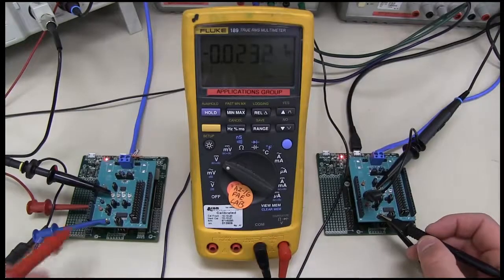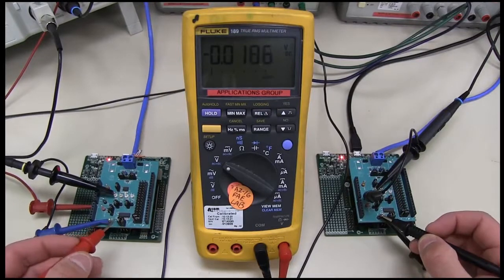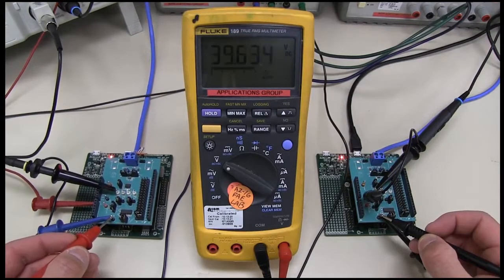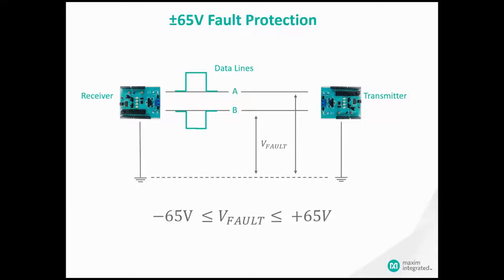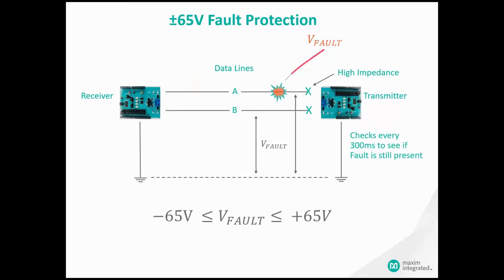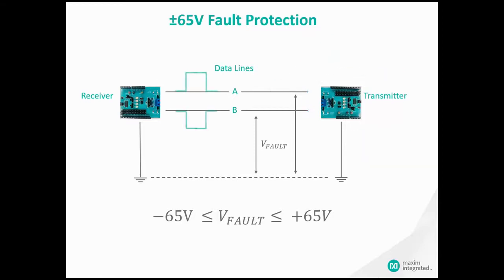Just to double check the difference in ground potentials, here's a direct measurement with the voltmeter. The A and B data pins can withstand up to plus or minus 65 volt fault on the data lines. The transceiver will temporarily shut down operation and periodically check to see if the fault is removed. Once it is, operation resumes normally — the part is protected and functionality is preserved.